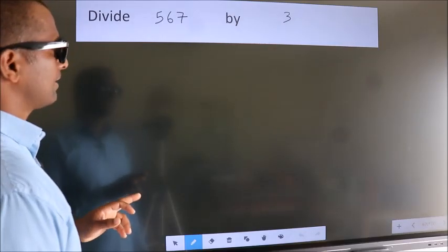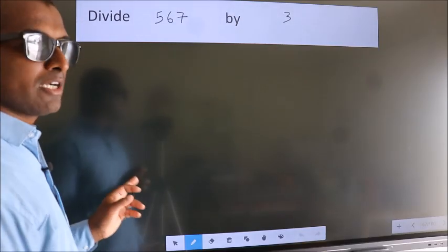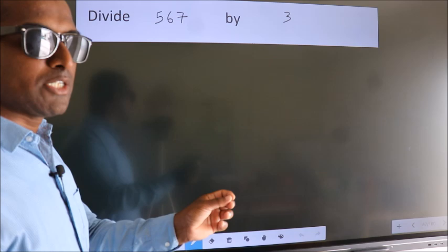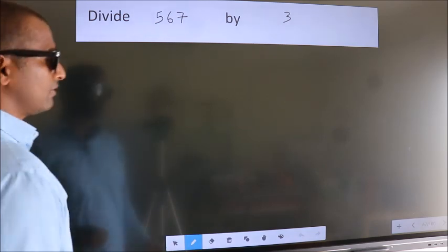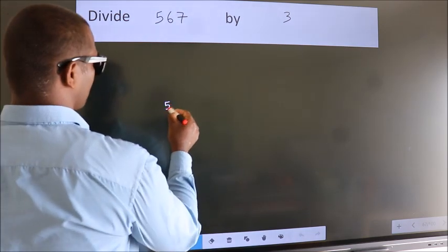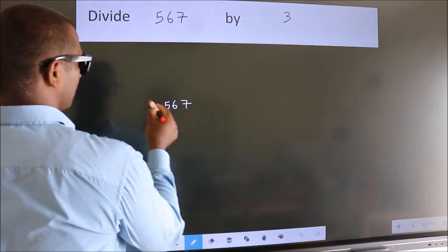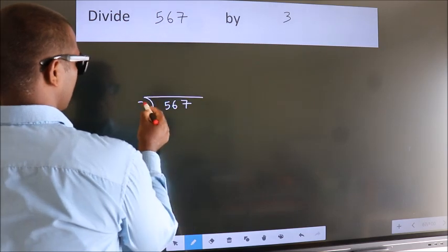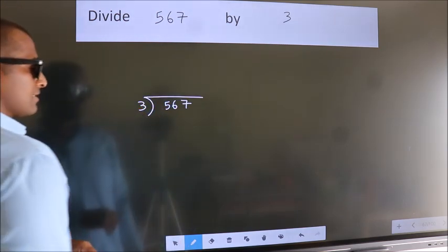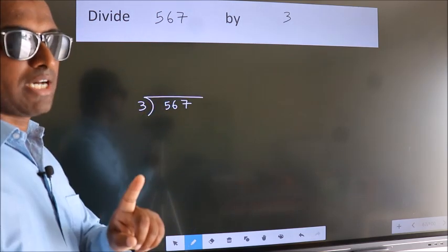Divide 567 by 3. To do this division, we should frame it in this way. 567 here, 3 here. This is your step 1.